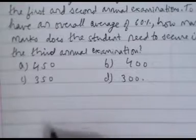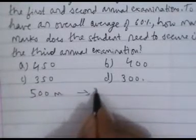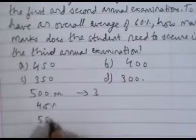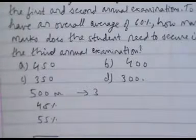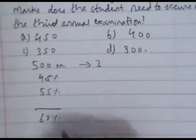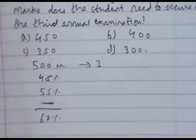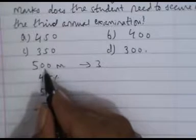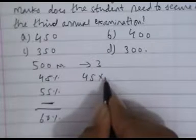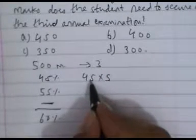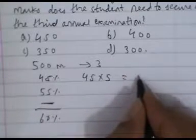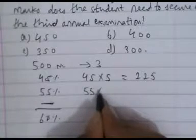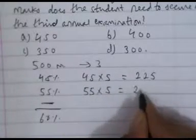In this question, we have 500 marks for each of 3 annual exams. The student secured 45% in the first exam and 55% in the second. We need to find the marks required in the third paper. 45% of 500 is 45 × 5 = 225. 55% of 500 is 55 × 5 = 275.